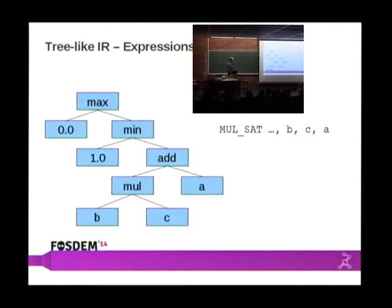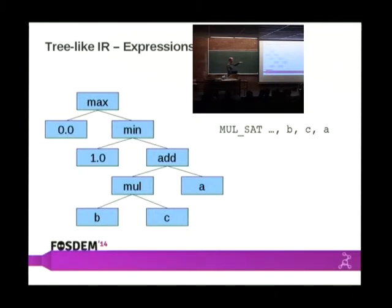It also makes doing any kind of CSE pass exceptionally difficult, because you have these huge trees and you have to do CSE on subparts of the trees. We also have difficulty identifying these sequences if, say, there's a swizzle operation in the middle so that the result of the multiply gets swizzled — trying to identify that when generating the MAD instruction. It ended up being a lot more complex than we had anticipated.